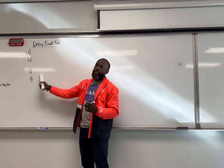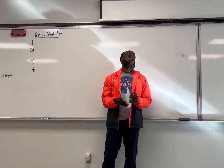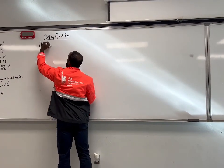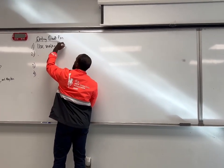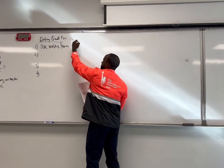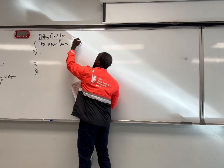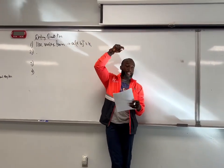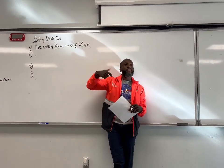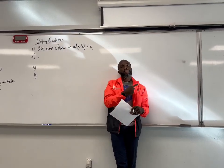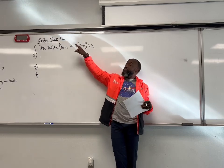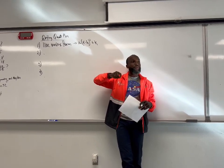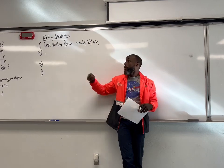In writing quadratic equations, there are just simple steps that we're going to use. Step one, we're going to use the vertex form. Do y'all remember what vertex form is? It's x minus h to the second plus k. So we're going to use the vertex form, because when we're trying to write the equation of a quadratic function, we're going to be given the vertex, and we're going to be given a point that the parabola goes through. And so the process to write a quadratic equation is kind of the same way of writing a linear equation in slope-intercept form — you're substituting in and solving for something. In this case, we're going to be solving for a.